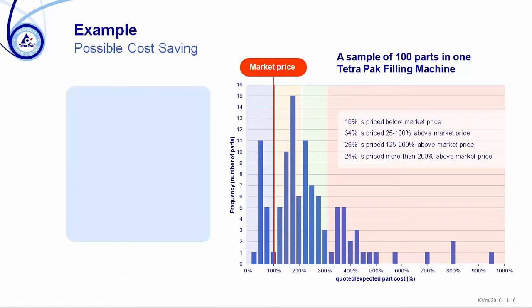To show an example where we have used aPriori in a cost reduction activity: we used aPriori to evaluate all the drawn parts in one specific machine, and simultaneously used this project to validate aPriori — having both aPriori and our manufacturing specialists cost all the parts. They agreed on a price considered the market price. As you can see from the graph, only one part out of 100 was bought at the market price. 16% were actually priced below market. 34% were priced 25% to 100% above market price. 26% were priced 125% to 200% above, and 24% were priced more than 200% above market price.